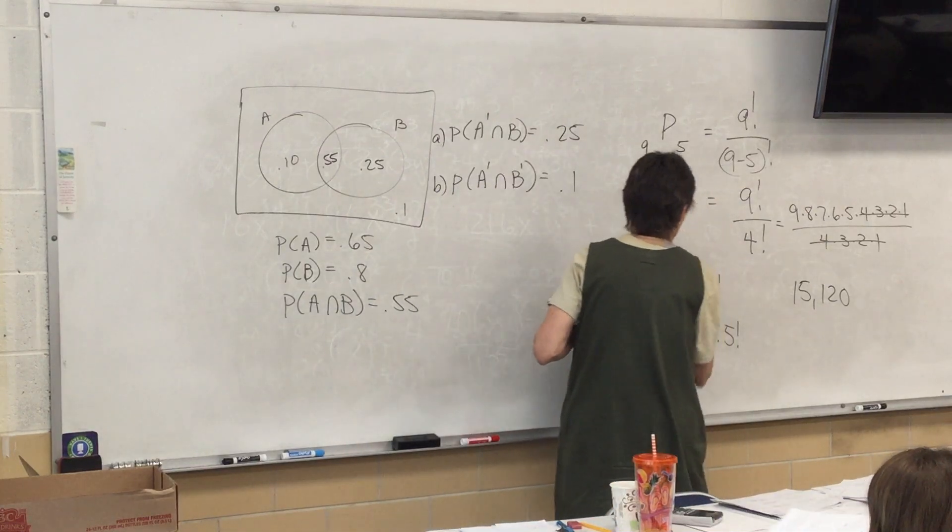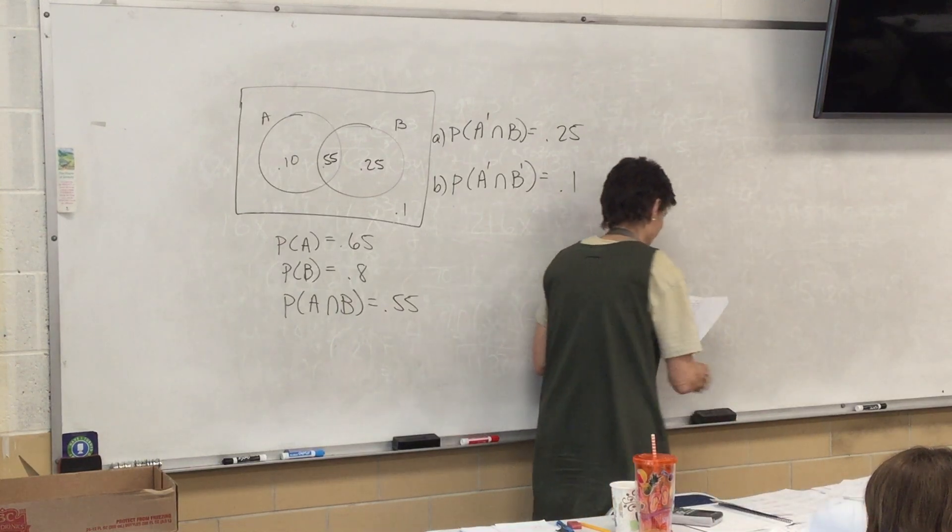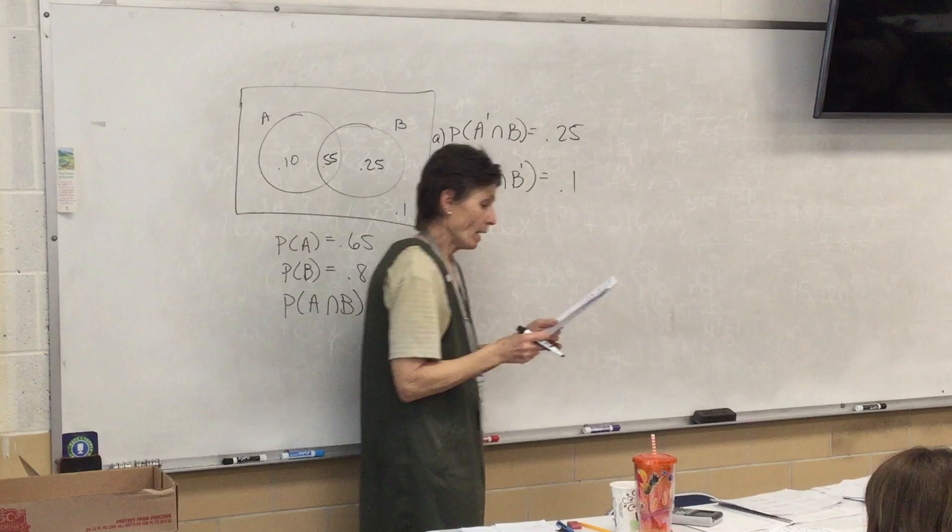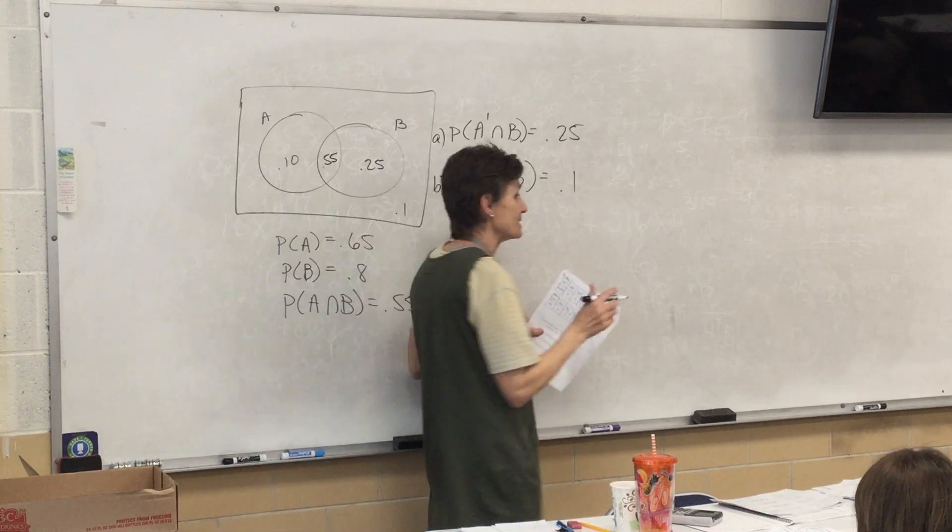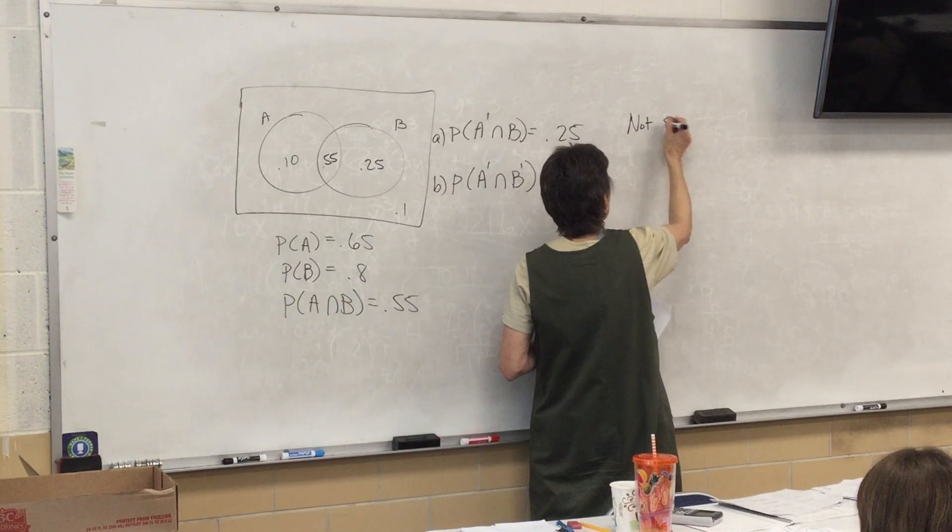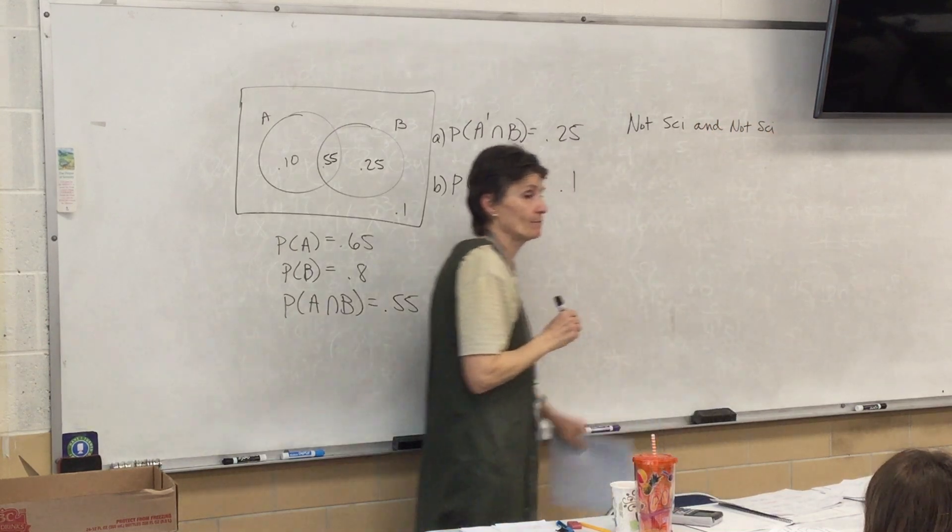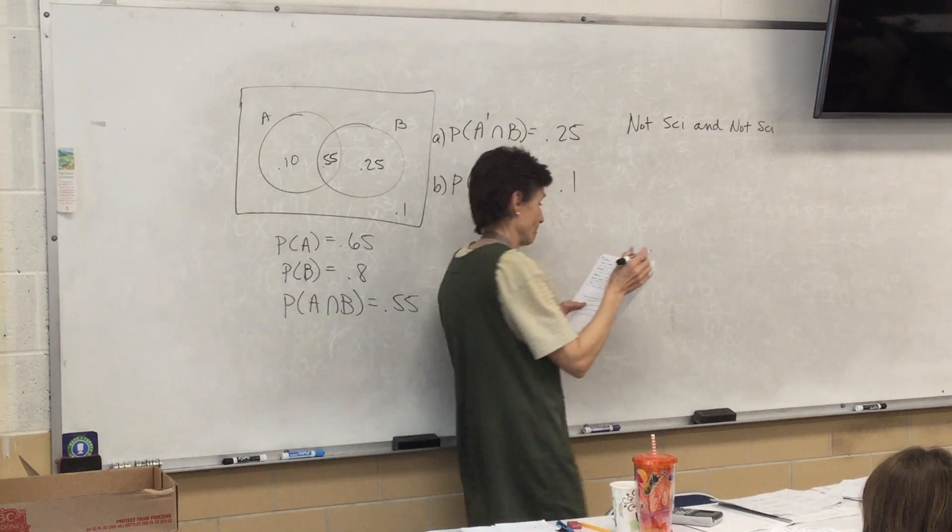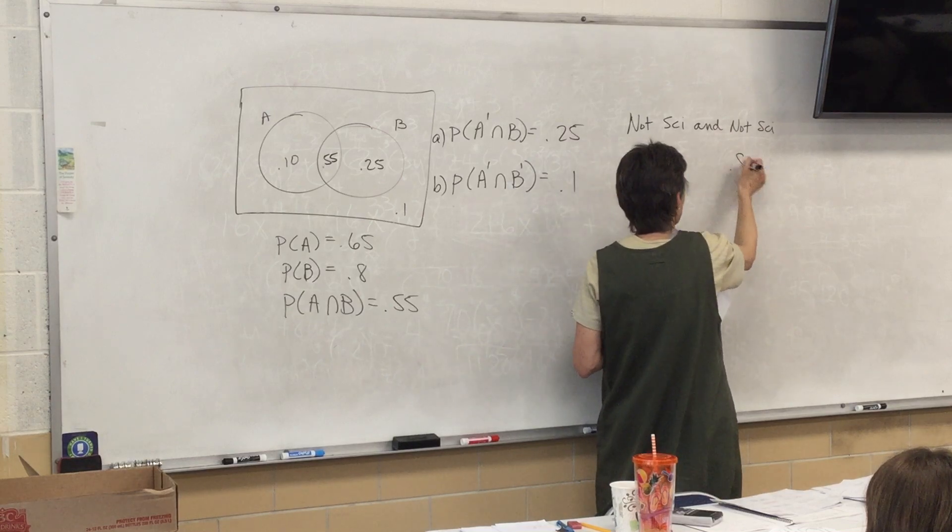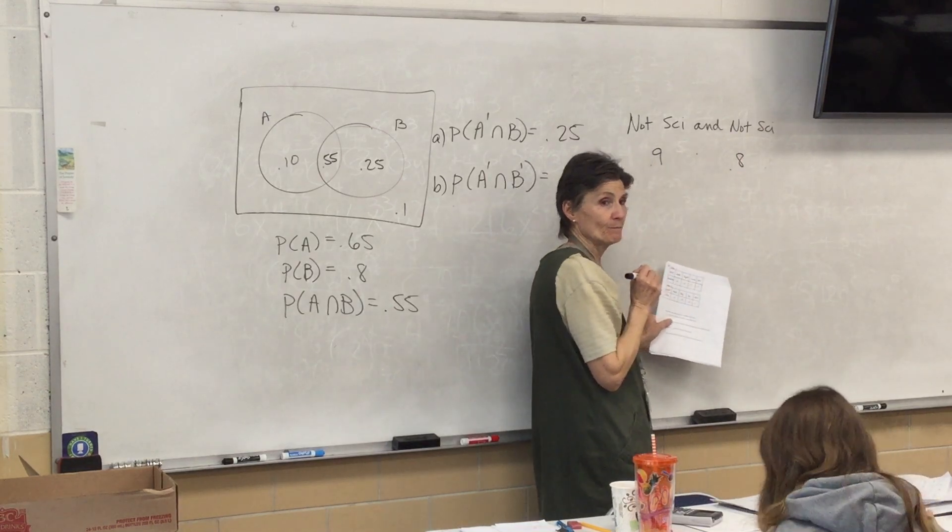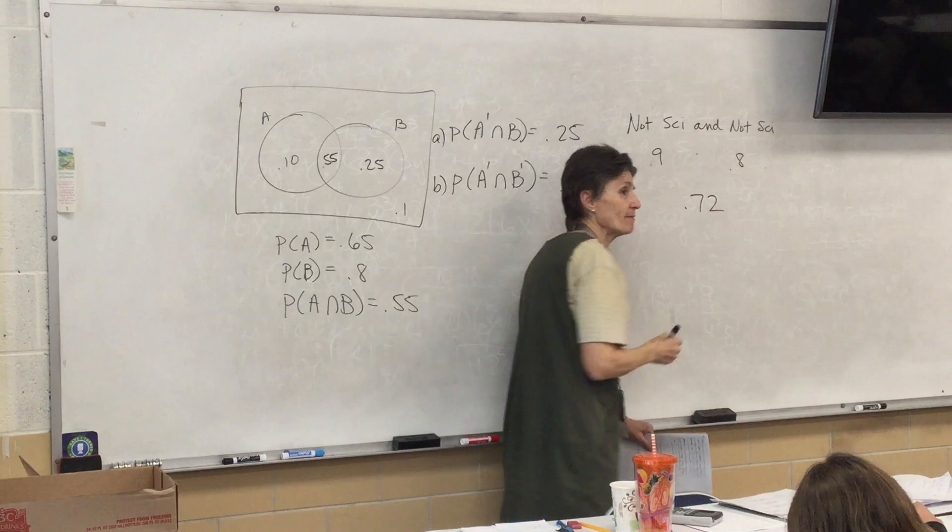All right. So here we go. What is the probability, if I pick a kid from each class, what's the probability that neither likes science? So not science and not science. That's what I want. So what is it for class one? 0.9. What is it for class two? 0.8. And it tells me I'm going to multiply. So my answer is 0.72? Yes.